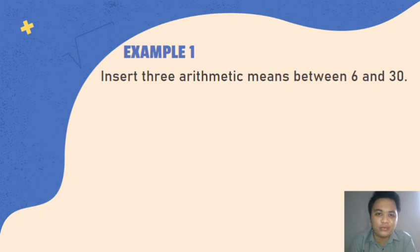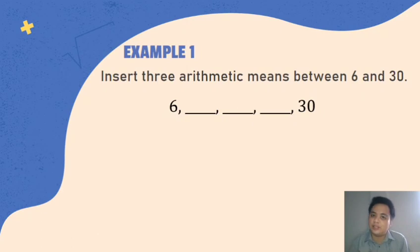So let us have our first example. So based on the example, sabi, insert three arithmetic means between 6 and 30. So imagine, you have number 6 and you have number 30. So you have the two numbers. And then you need to insert three arithmetic means. So kung given yung 6 tsaka 30, maglalagay ka daw ng tatlong numbers sa gitna nila. So ito yung tsura niya. So we have 6 as the first term and 30 as our last term.